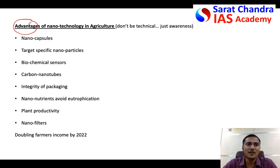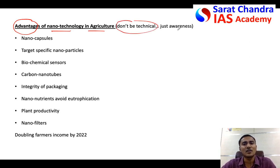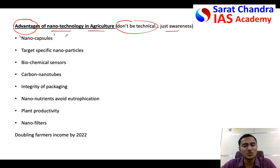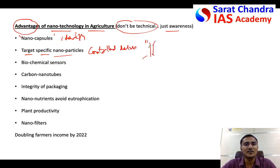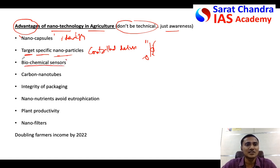Now the first aspect of the question — what are the benefits or advantages of nanotechnology in agriculture? Don't go too technical; they are just testing your awareness. You can say nano capsules are used to identify and treat plant diseases. Target-specific nanoparticles enable controlled delivery of nutrients — for example, delivering nutrients only to specific parts of the plant such as the roots.